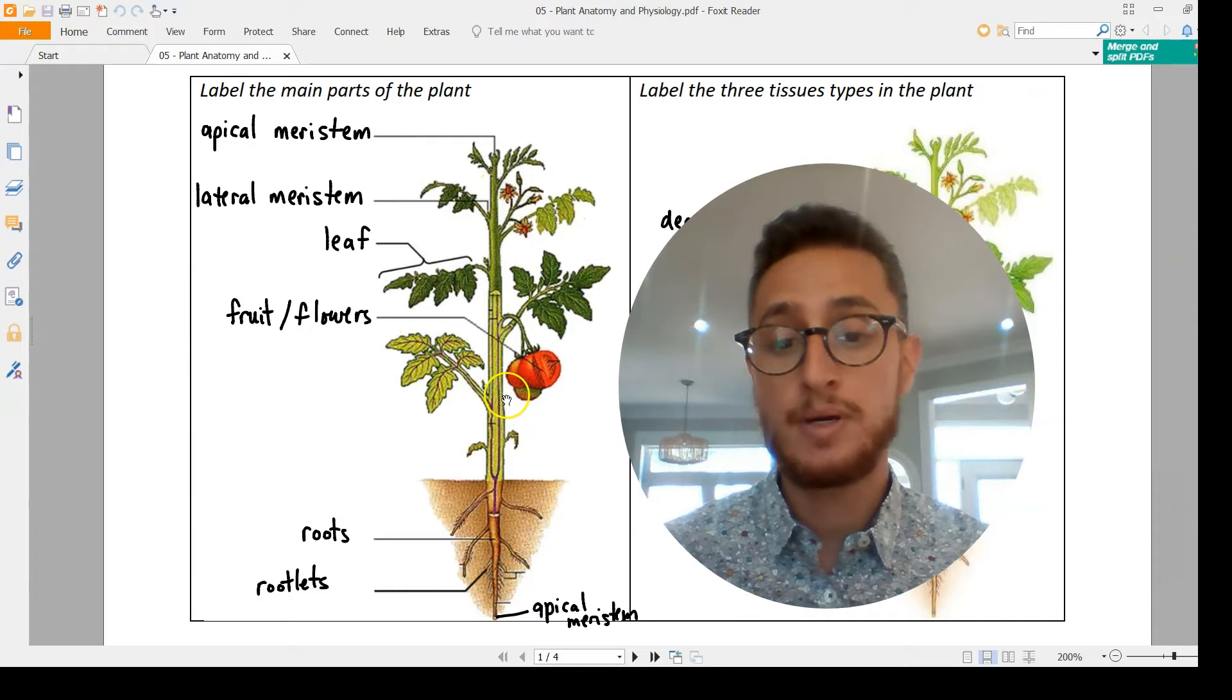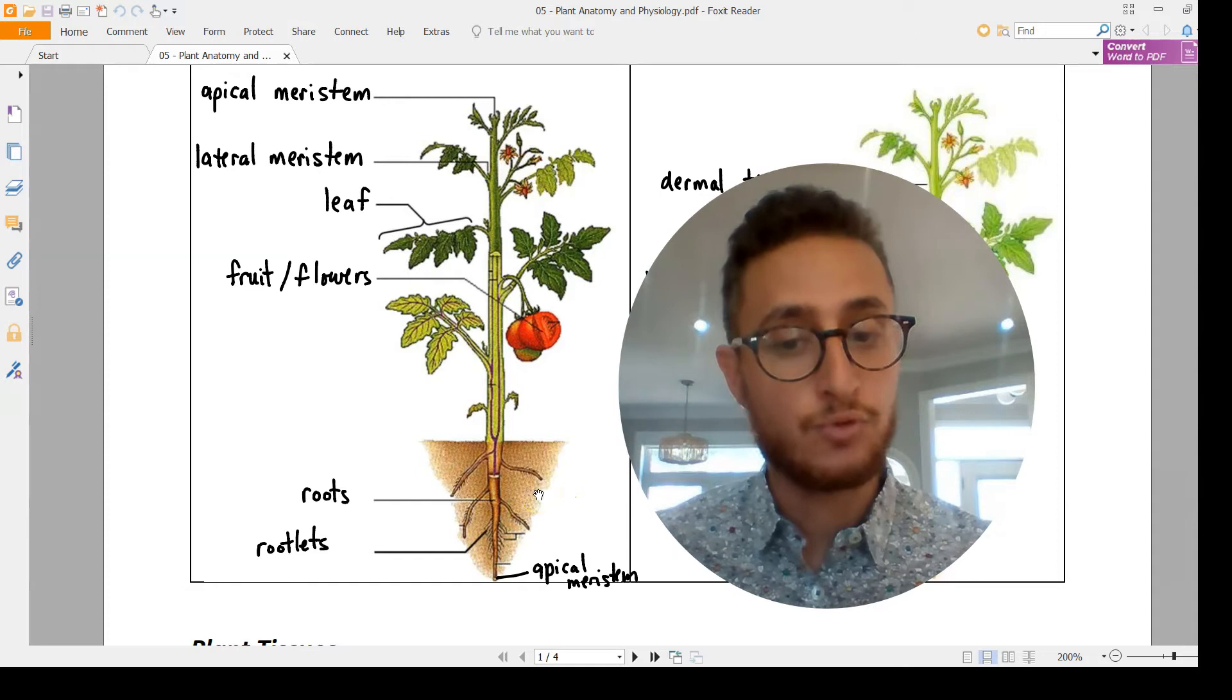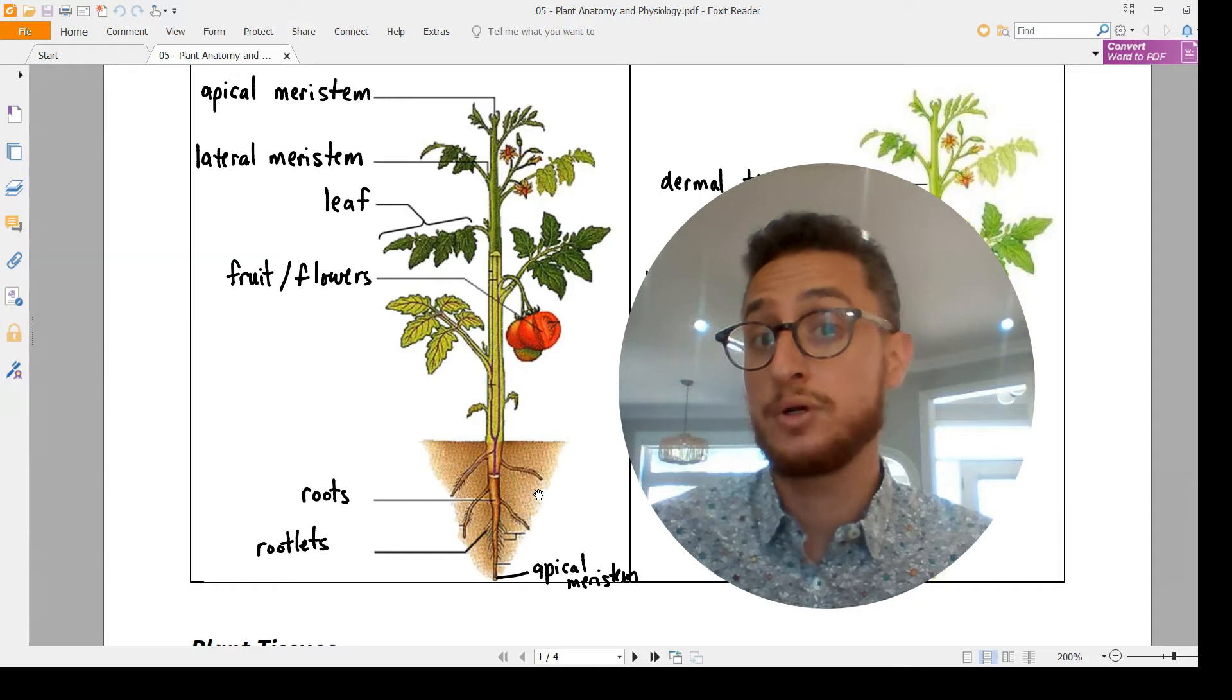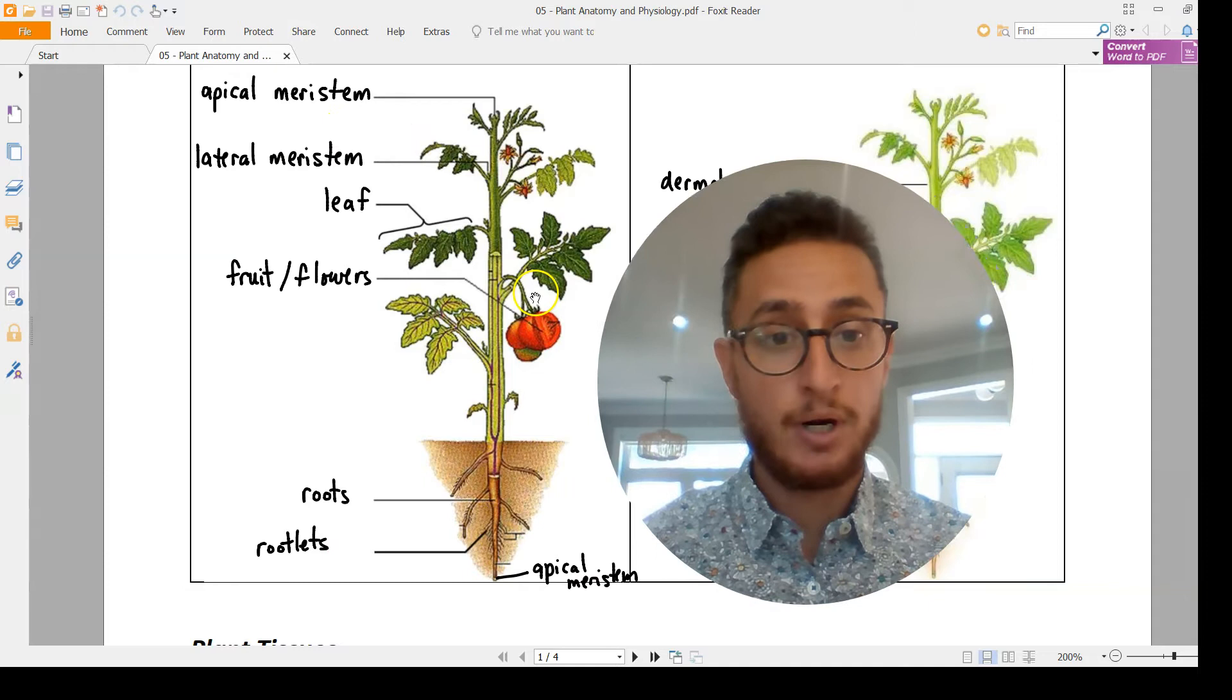Each meristem responds to environmental conditions. If there's not a lot of light, maybe a meristem is going to grow into a new shoot to reach for the light. If there is enough light, maybe it's going to turn into a leaf. And when conditions are right and the plant has gathered enough resources, maybe one of those meristems is going to turn into a flower.